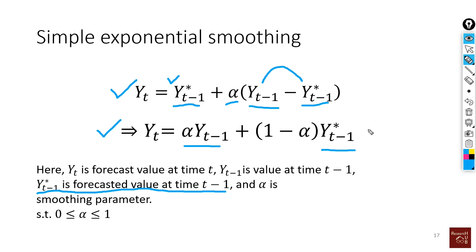We use the previous actual value and the previous forecasted value together. A lower alpha gives lower weight to recent values, while a higher alpha gives higher weight to recent values. Normally in maritime or supply chain contexts, an alpha value of 0.3 or 0.4 works just fine, but we can try to optimize it.